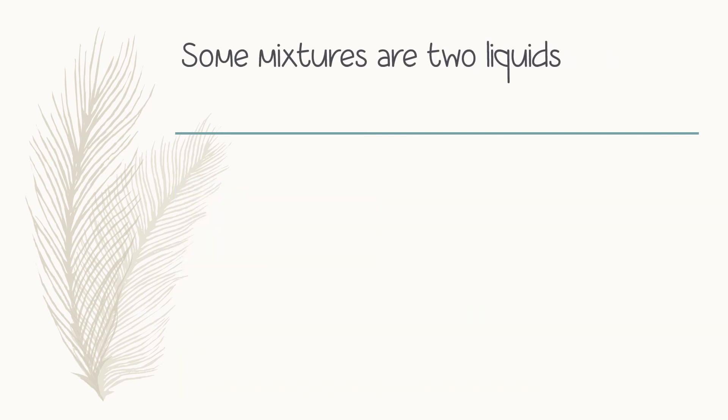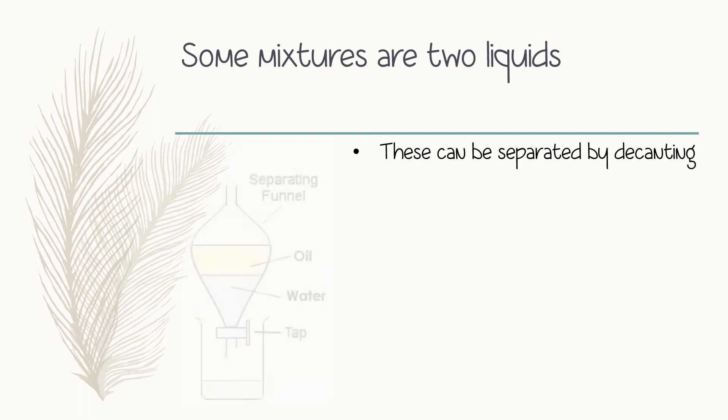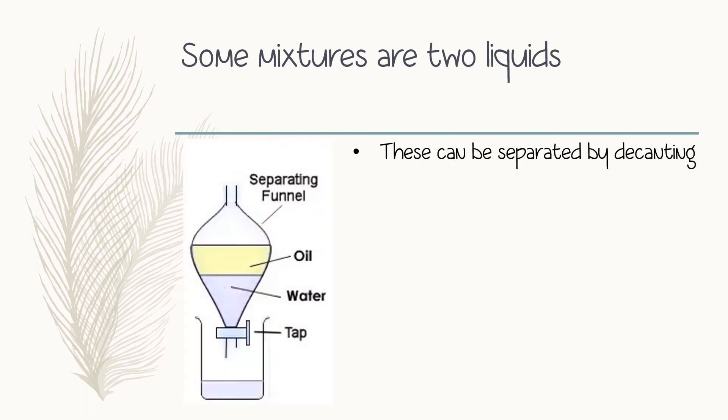The last one that we will look at is mixtures that are two liquids. They can be separated by decanting. For example, when you mix water and oil — if you mix water and oil and let it rest, the oil will rise to the top and the water will go to the bottom. We use a separating funnel to separate these two mixtures. And this then brings us to the end of our lesson.